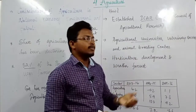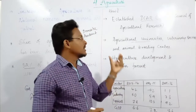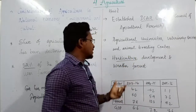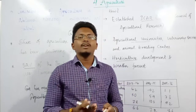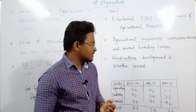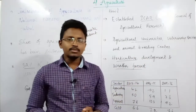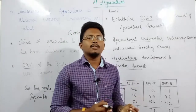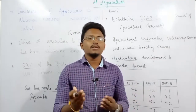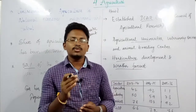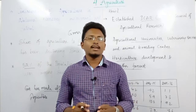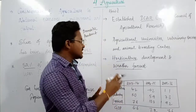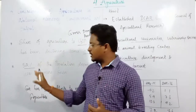The government also set up veterinary services, animal breeding centers, and horticultural development. Additionally, it developed weather forecasting systems to inform farmers about expected rainfall using technology — helping farmers know when to sow seeds, when to harvest, and when to take precautions. All these changes were brought by the government to modernize agriculture.